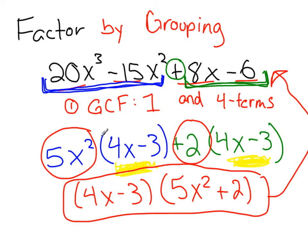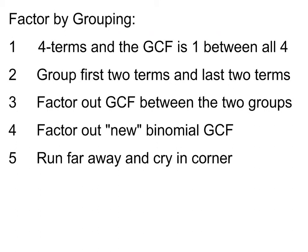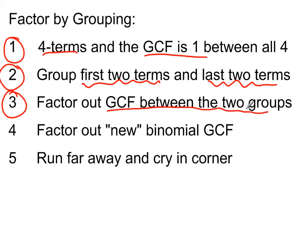Alright, so we need to recap those steps. I verbalize a lot of them. So let's have it in written words in front of us. So here's our factor by grouping. The first thing we need is four terms, and the GCF is 1 between all four. The next thing we need to do is group first two terms together and last two terms together. From there, once we've grouped them, we factor out a GCF between the two groups. Our last step is to factor out a new binomial GCF that will appear. And if you're a little bit sad from all this, you can run far away and cry because you'll be done after step number four.